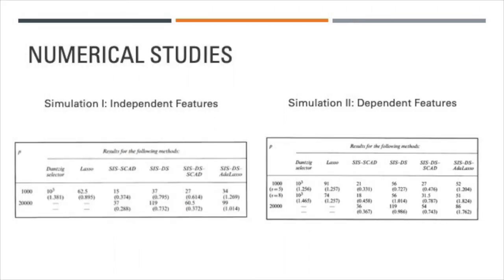We have taken a few simulations from the article to help you understand the advantages of sure independent screening. For the first simulation, the authors used a linear model with IID standard Gaussian predictors and Gaussian noise with standard deviation of 1.5. The first model has n equals 200 and p equals 1000 as its parameter space. The second model has n equals 800 and p equals 2000 as its parameter space.